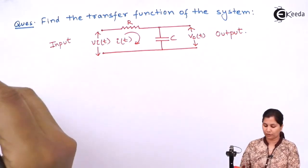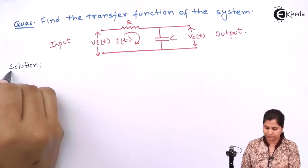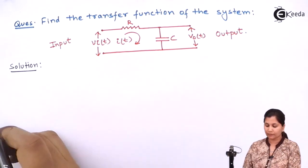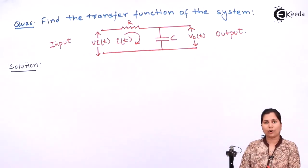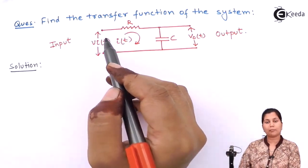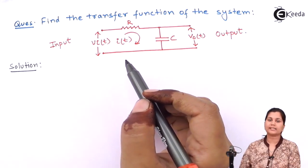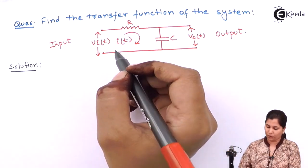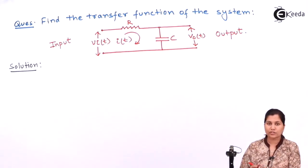Let's solve it. We know that Kirchhoff's voltage law says that in a loop, the algebraic sum of the voltages is equal to zero. So let's apply the KVL in this first loop.